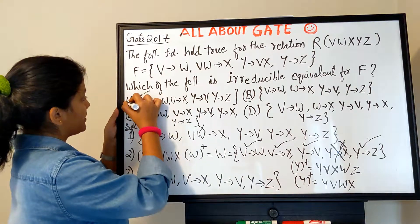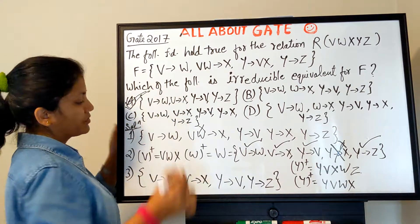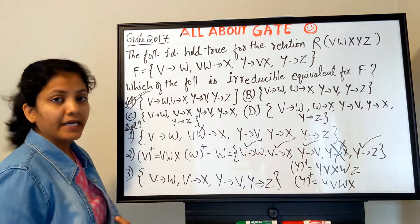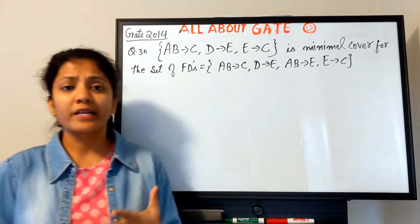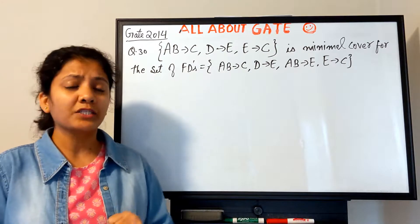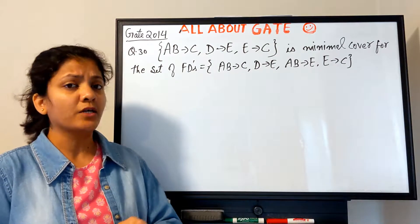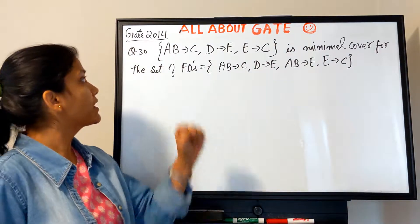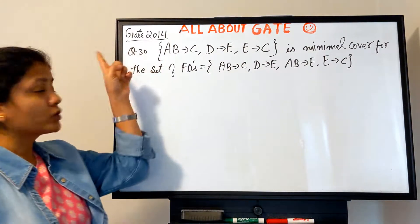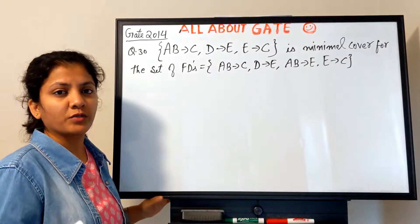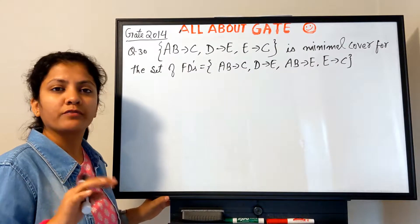This final set — V→W, V→X, Y→V, Y→Z — exactly matches option A. So the answer for this GATE 2017 question is option A. Now let's quickly solve the next question on minimal cover from GATE 2014.